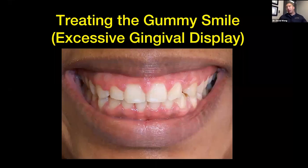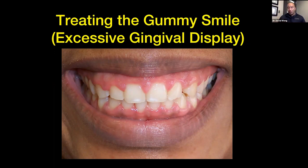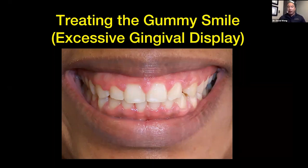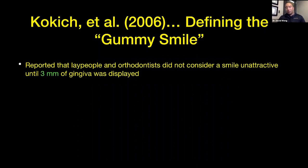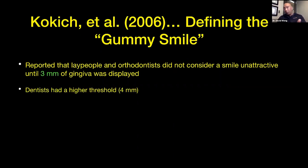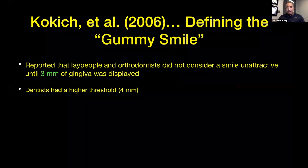Remember, excessive gingival display or the gummy smile was defined — from Kokich's papers — as showing four millimeters or more of gum tissue above the central incisors. Beauty is in the eye of the beholder, though. Even though the papers say four millimeters is the threshold, a patient showing three millimeters might say, 'I think I have a gummy smile,' and I could agree with that. Lay people and orthodontists did not consider a smile unattractive until three millimeters of gingival display, while dentists had the higher threshold of four millimeters. So depending on who you ask, three to four millimeters of gingival display is a gummy smile.